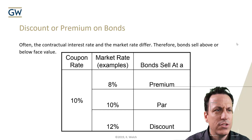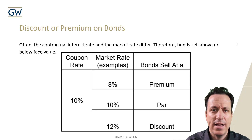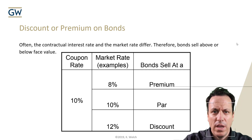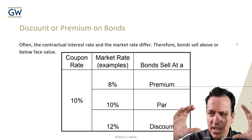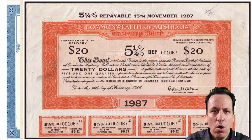My name is Kyle and I'm your Corona accountant. So this is a chart that we had from the last class, and in this chart we talked mainly about par value and coupon rates.